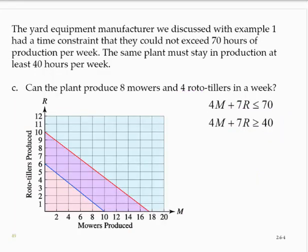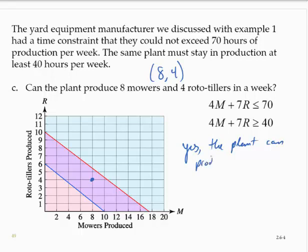Part C: can the plant produce 8 mowers and 4 rototillers in a week? Remember that the solution is only the strip between those boundary lines. Eight mowers and 4 rototillers corresponds to the ordered pair (8, 4). Finding that point on the graph, it's within the region of solutions. So yes, the plant can produce 8 mowers and 4 rototillers.